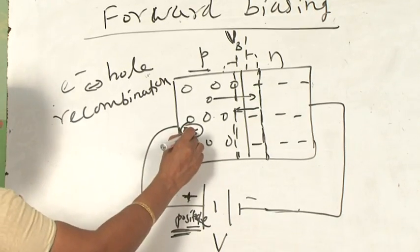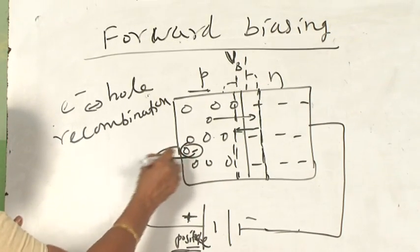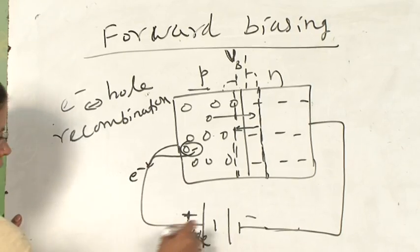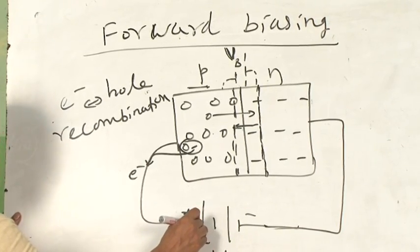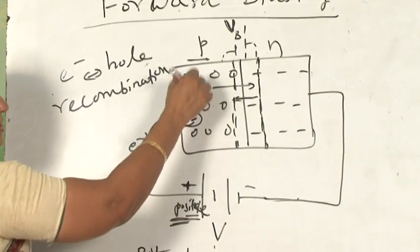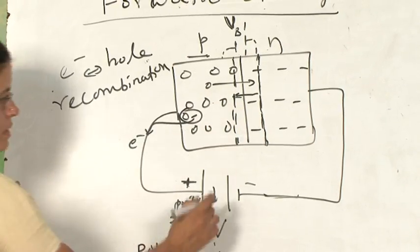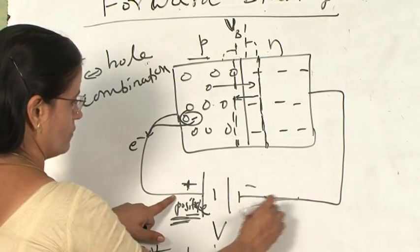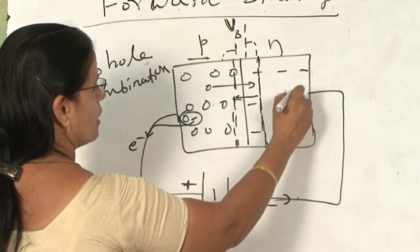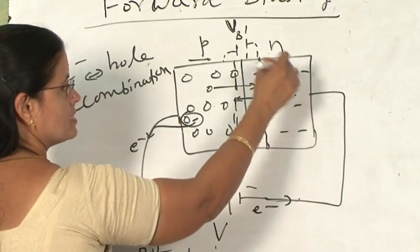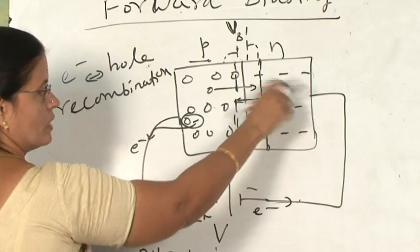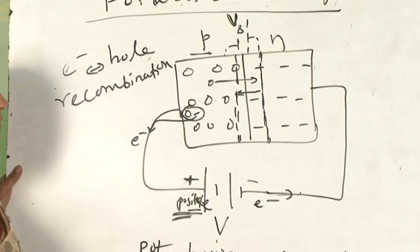What will this electron do? This will come out through the conducting wire and enter into the positive terminal of the battery. Therefore, the deficiency of hole here is compensated. At the same time, one electron will leave this negative terminal and go here and compensate for the deficiency of electron which is due to the recombination of electron-hole combination.